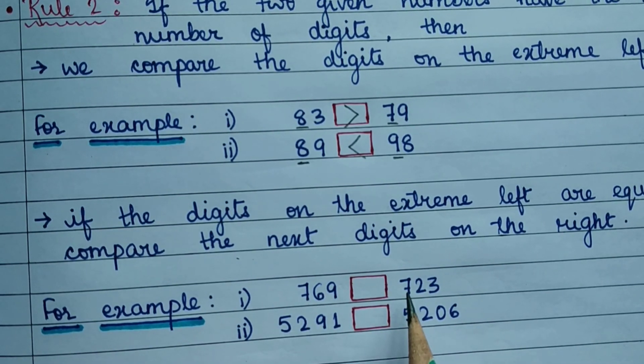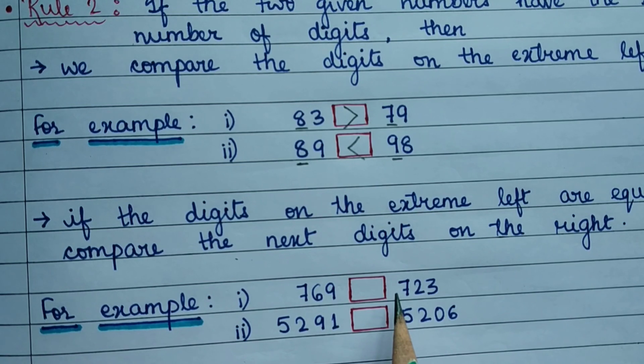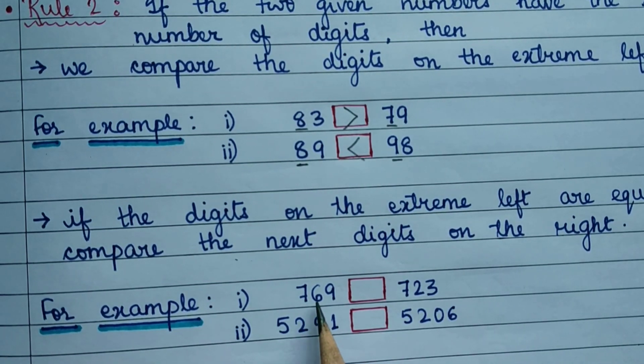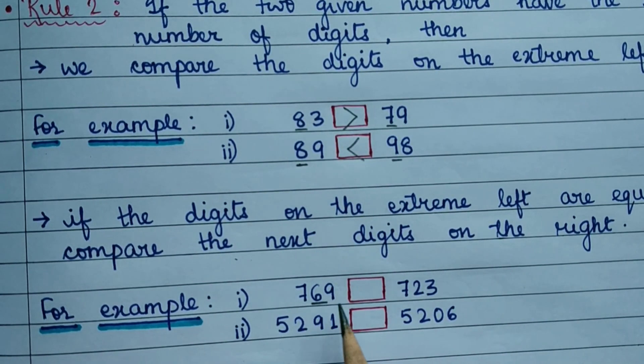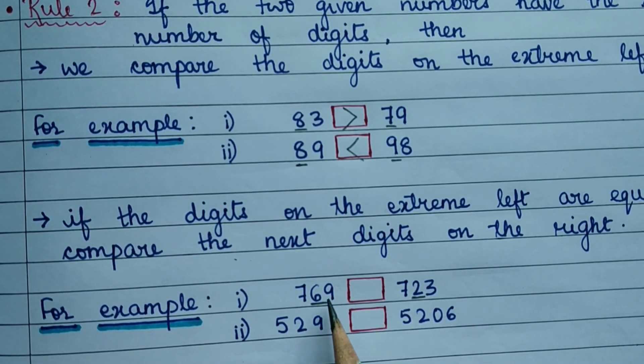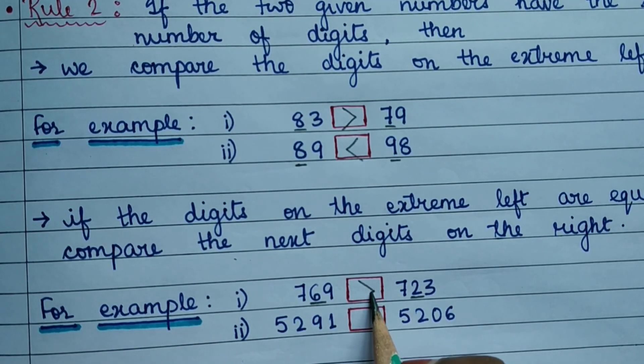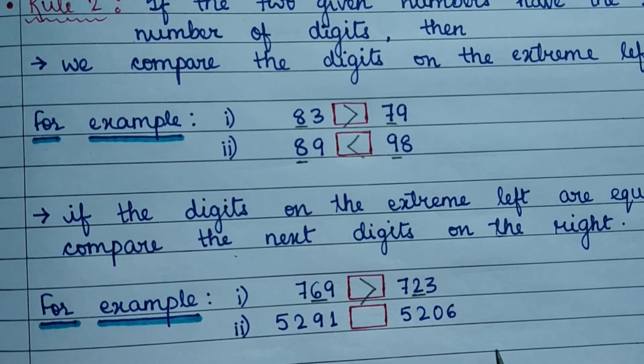...so hum pehle waale ko compare karengi. But yaha peh jo extreme left mein number hai, wo dono equal hai. So hum compare karengi isko, the number to the right of the 7. Then 6 and 2. Since 6 is greater, the number 769 will be greater.